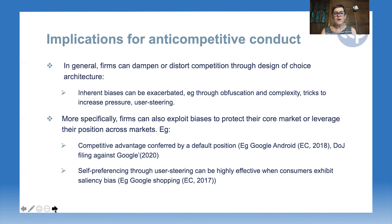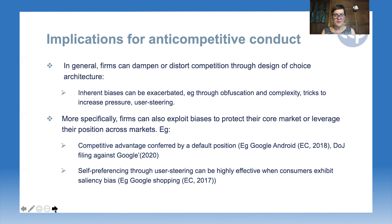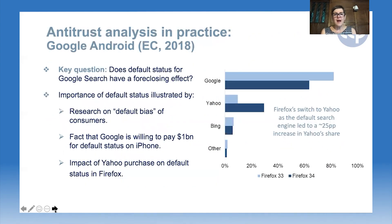And likewise, this is where the Google Shopping case comes in: self-preferencing through user steering can be really highly effective when consumers exhibit saliency bias. They tend to go with the thing that's in front of them rather than scrolling down or clicking onto another screen to find what might be the best option. So that's very whistle-stop. I thought it was worth highlighting some of the evidence that gets used on these sorts of topics in practice.